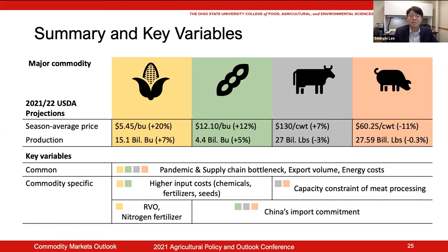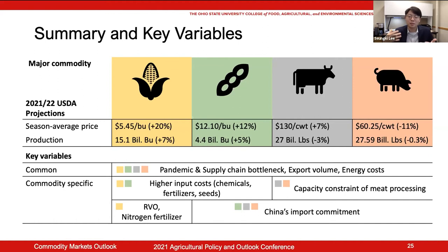Here is the last slide for a quick wrap-up. We have looked through four major commodity markets. Overall, both corn and soybean are reported to have positive prospects in terms of production and price. In livestock, beef price is predicted to be higher than last year, contrary to the dropping pork price. The common key variables to watch are pandemic and supply chain issues, export, and energy cost — these are fundamentally impacting all commodity markets.